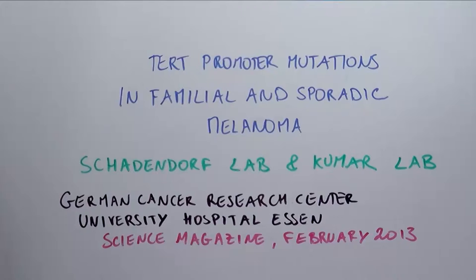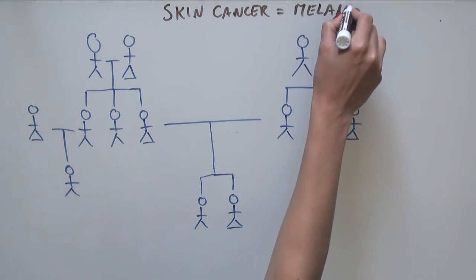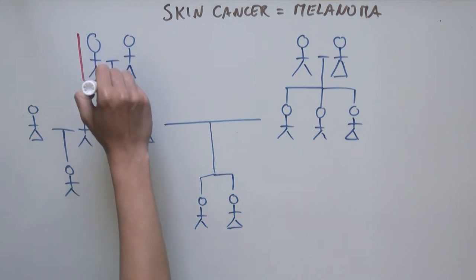Their findings were published in their article titled, TERT Promoter Mutations in Familial and Sporadic Melanoma, produced by the Schattendorf and Kumar Labs at the German Cancer Research Center in the University Hospital Essen in Science Magazine in February 2013. These scientists studied a large multi-generational family that had a very high incidence of skin cancer or melanoma.